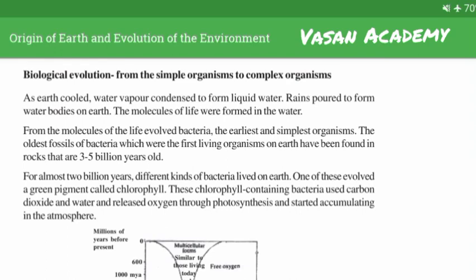Biological evolution from a simple organism to a complex organism. As earth cooled, water vapour condensed to form liquid water. Rain poured to form water bodies on earth. The molecules of life were formed in the water.